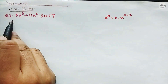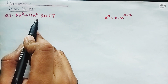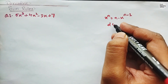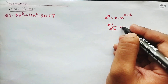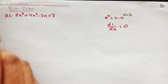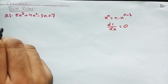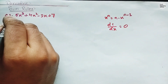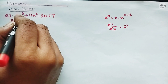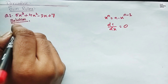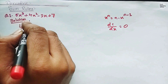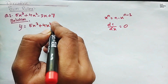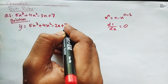Our first question is 5x cubed plus 4x squared minus 2x plus 7. One more thing you need to know is that the derivative of a constant with respect to anything is equal to 0. Let's proceed with the solution of this numerical. Write solution: let y equals 5x cubed plus 4x squared minus 2x plus 7.